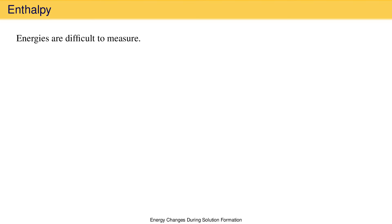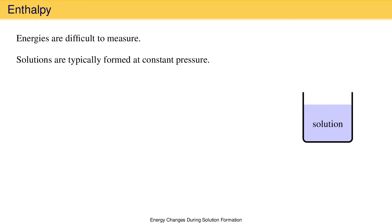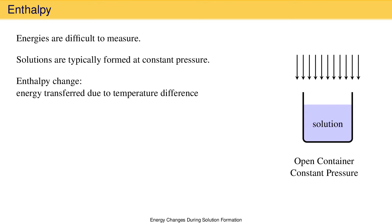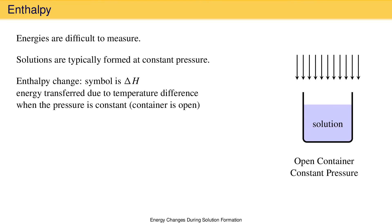Before we talk about that, I need to remind you that solutions are typically formed under constant pressure conditions. In the laboratory, the container is typically open to the atmosphere — like a beaker — which means the solute, solvent, and solution are all exposed to the same pressure. Because of this, the quantity we can measure easily is an enthalpy change: energy transferred due to a temperature difference under constant pressure conditions. The symbol for an enthalpy change is delta H, and because a temperature difference is easy to measure, enthalpy is easy to measure.